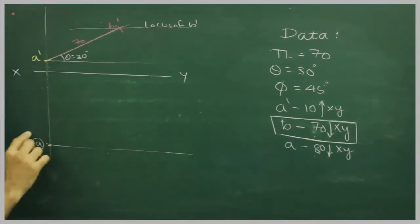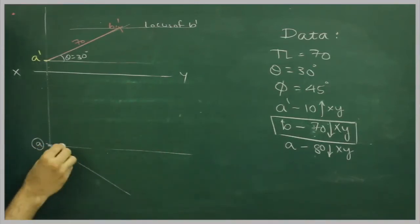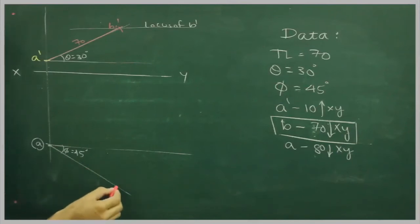Now whatever assumption would be there, I will be doing it with circle. Then I will draw phi, which is 45 degrees. On that I can cut true length, so I can get b1 also. That would be also assumption, that would be assumed one.